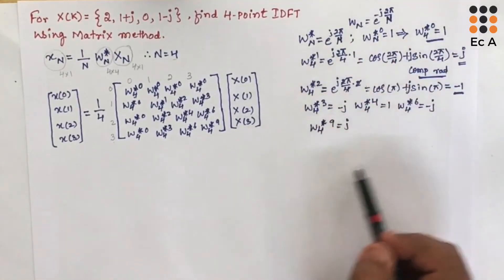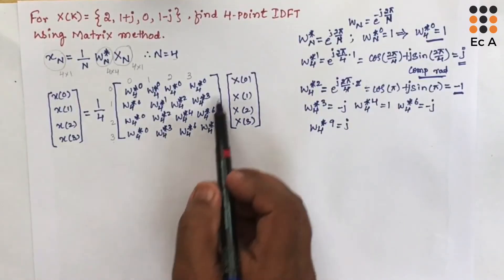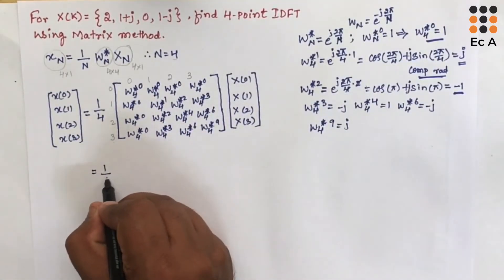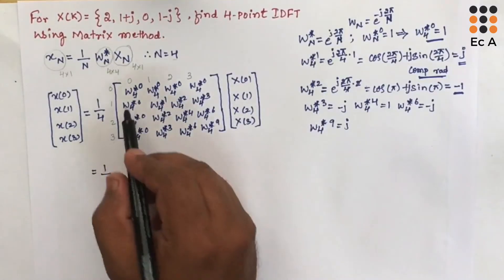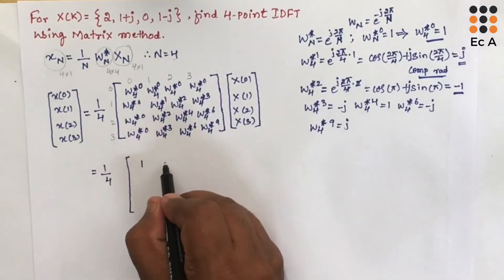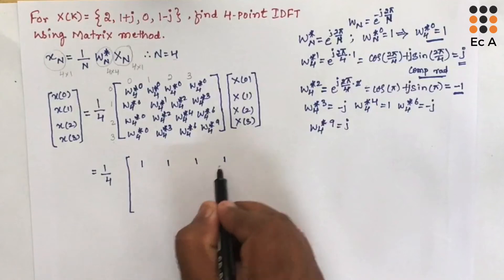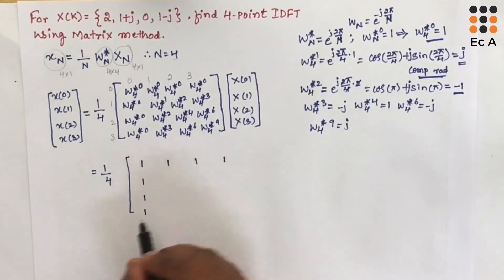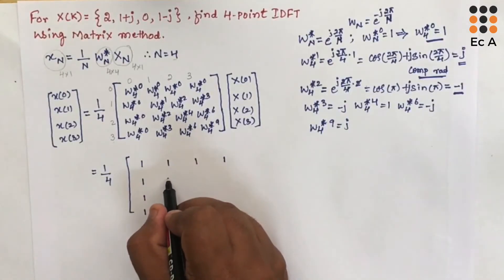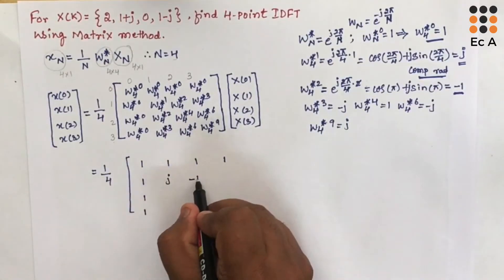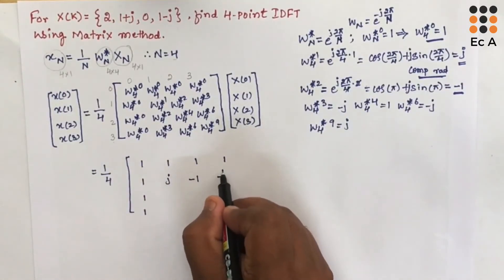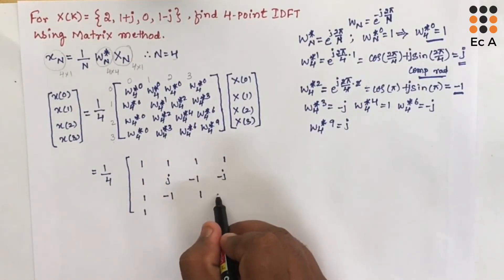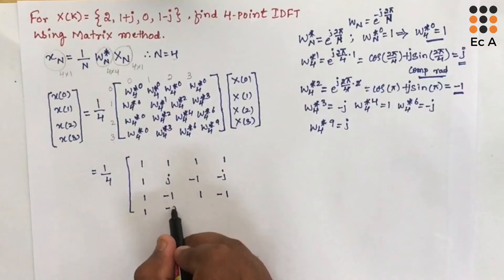After calculating all these values, we substitute them into the matrix. The result is (1/4) times the 4×4 matrix: first row is [1, 1, 1, 1]; first column is [1, 1, 1, 1]; second row (remaining entries) is [j, -1, -j]; third row gives [-1, 1, -1]; fourth row gives [-j, -1, j] — wait, row 3 col 2 onward: 1, minus 1, minus j.